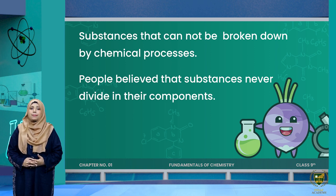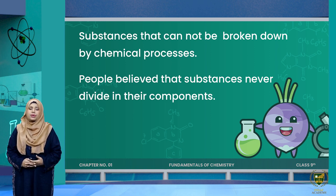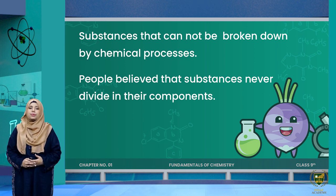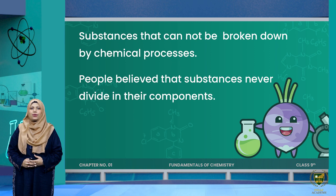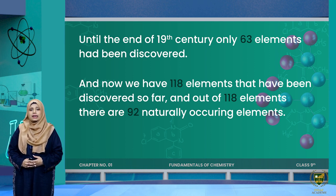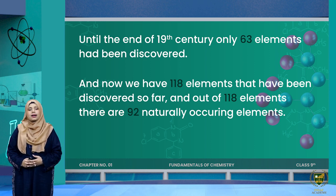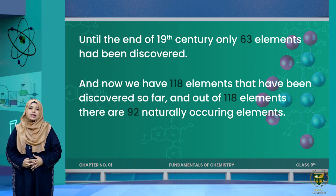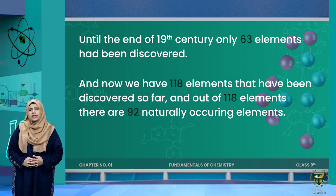At that time, substances could not be broken down by chemical processes — people of that time believed that pure substances could never be divided into their components. Until the end of the 19th century, only 63 elements had been discovered. Now we have 118 elements discovered so far, and out of those 118 elements, there are 92 naturally occurring elements. You have to memorize this number: 92 naturally occurring elements — this is very important.